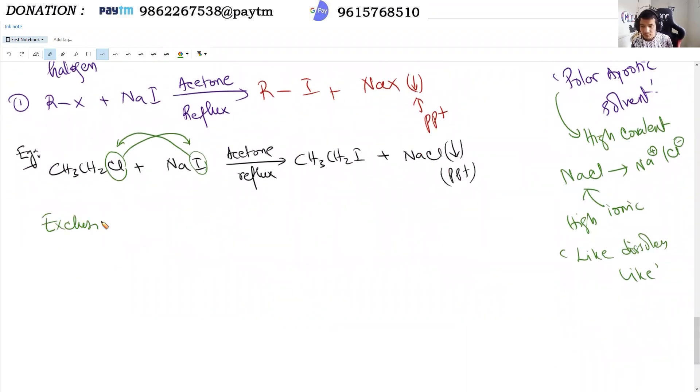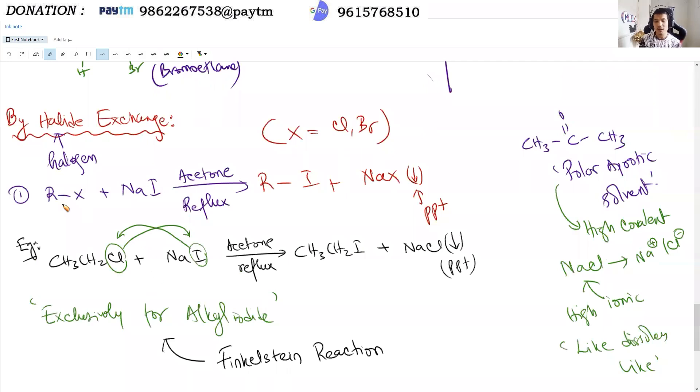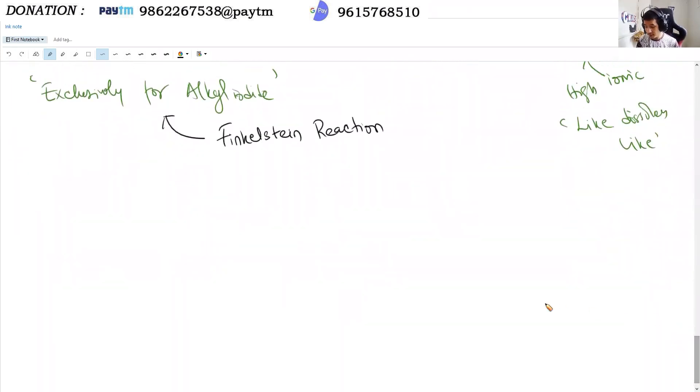This chemical reaction is exclusively for alkyl iodides. The reaction is called the Finkelstein reaction - F-I-N-K-E-L-S-T-E-I-N. This is a very important named reaction where alkyl halides react with sodium iodide in acetone medium.